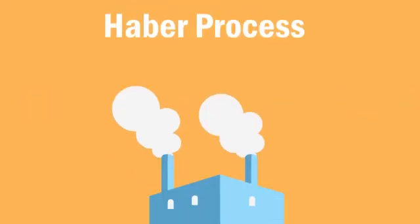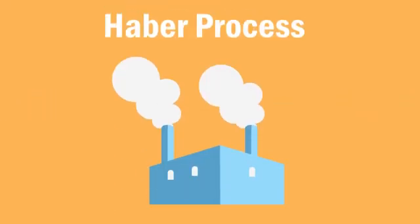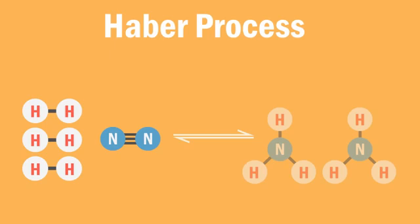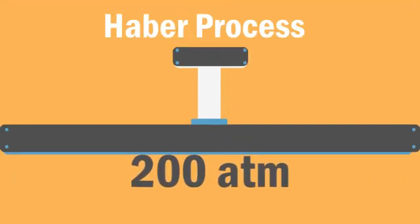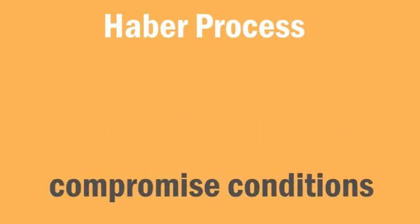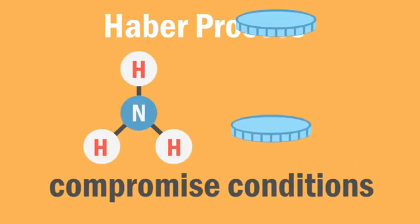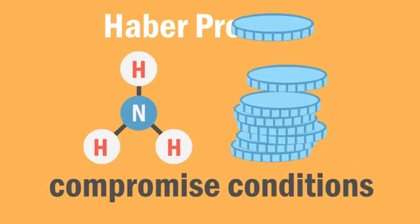In conclusion, the Haber process is the industrial process to produce ammonia from hydrogen and nitrogen. It is conducted at 400 to 450 degrees Celsius and at 200 atm in the presence of an iron catalyst. These are compromised conditions in order to maximize ammonia production and economic profit.